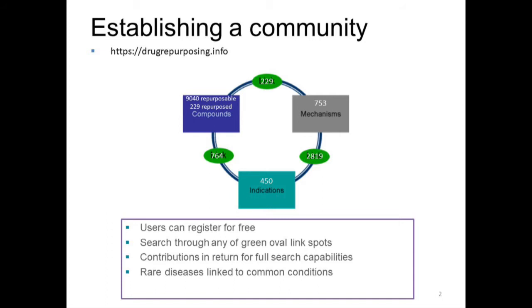I've divided the world into compounds, mechanisms, and indications, and this is useful because you can go any which way around this circle. You can go from any one of those three boxes to another box, either backwards or forwards, through the linkage ovals shown in green. By clicking on one of those things, you can go from compounds to mechanisms, mechanisms to indications, or compounds to indications, and backwards and forwards.